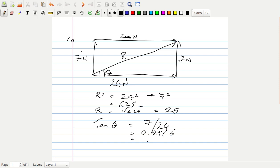If we round that to four significant figures, we have 0.2917. If we take the arctan of that, tan to the minus 1 of 0.2917, we get 16.26 degrees. So theta equals 16.26 degrees and R equals 25.